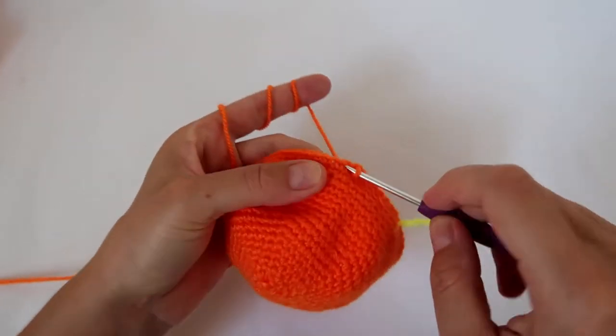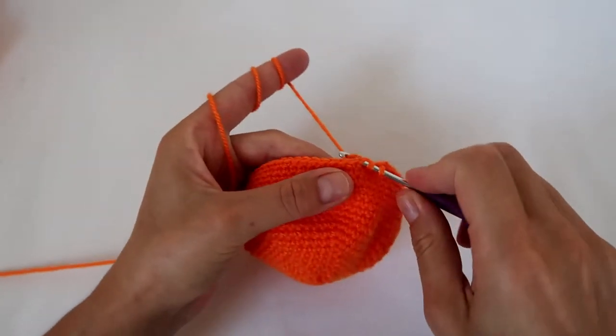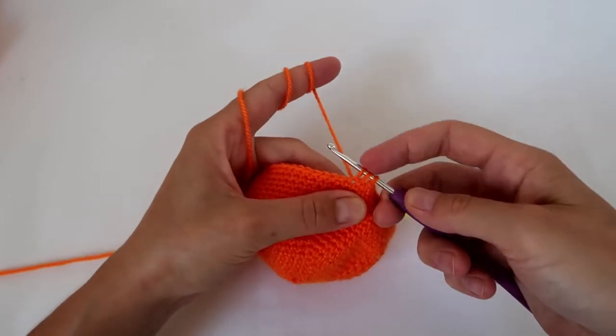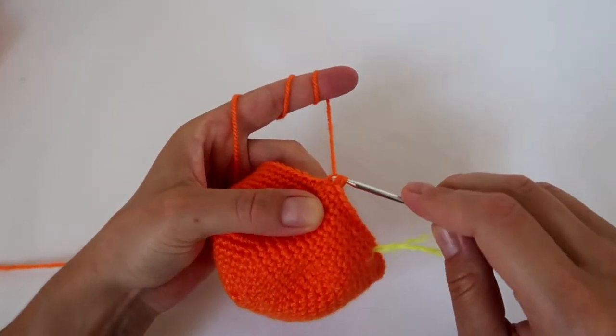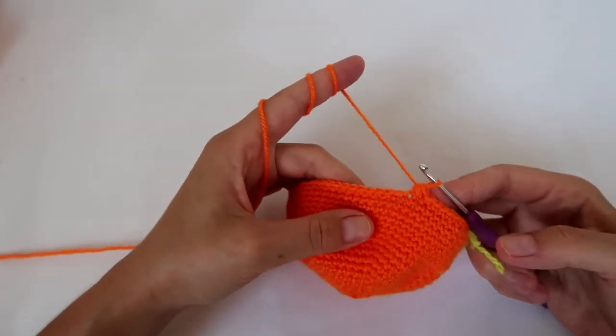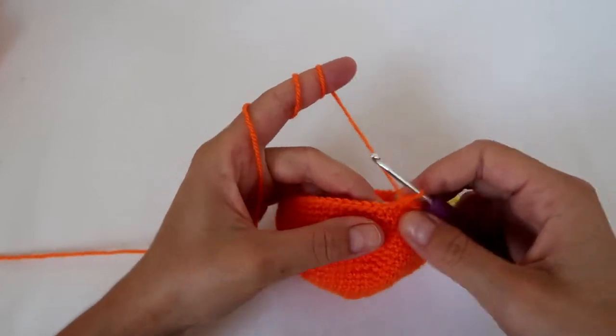Which is pull the yarn over, and then go to the next stitch, pull the yarn over again, and then there are 3 loops on the hook, and only then do you yarn over completely. There we go. And I'm just going to repeat those steps all the way around.